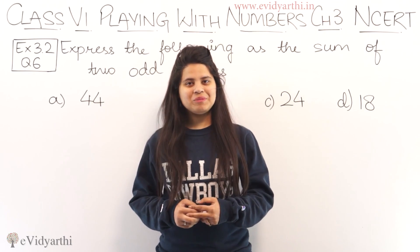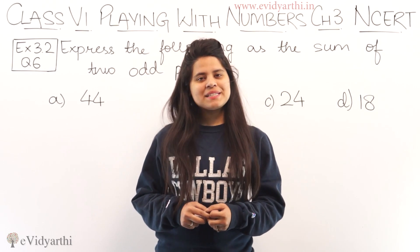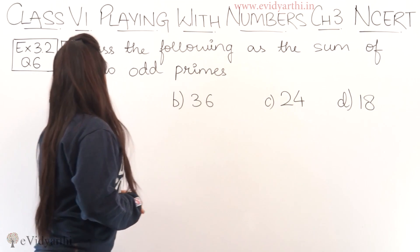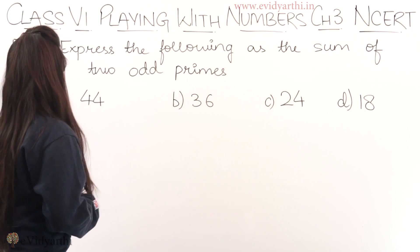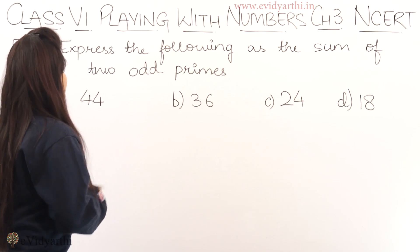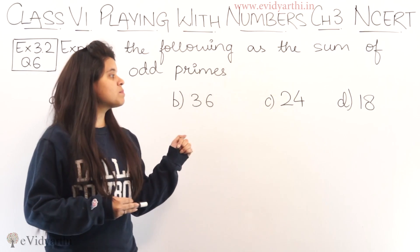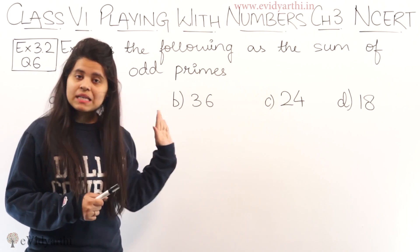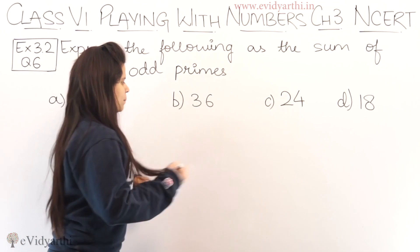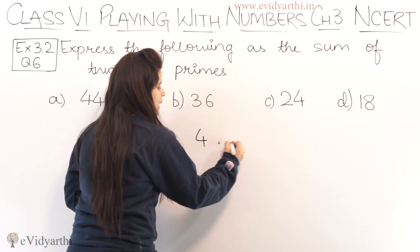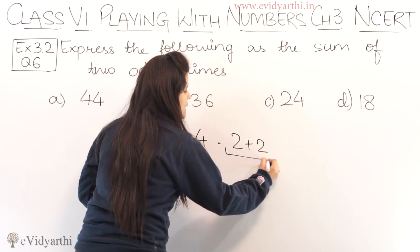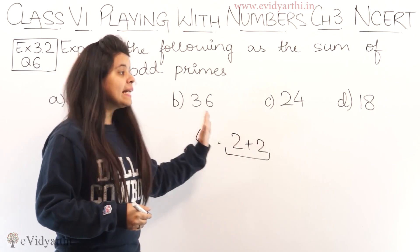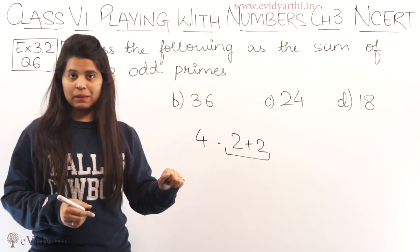Hello everyone, this is Manji from Evitaati.net, coming to question number 6, exercise 3.2. This question mein paas hai: express the following as the sum of 2 odd primes. Yahan pe aapko different numbers given hain, aapko inko as a sum of 2 odd primes likhna hai. Jaise agar number 4 hai, so I can write it as 2 plus 2 — that is sum of 2 numbers. Aise hi aapko do pairs mein divide karna hai, lekin wo odd prime hone chahiye.